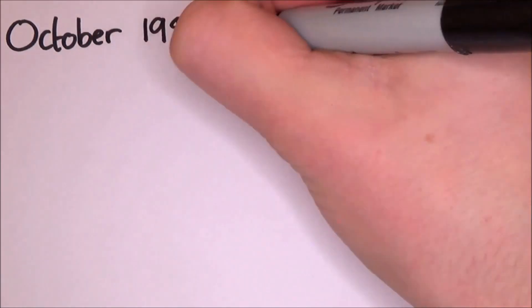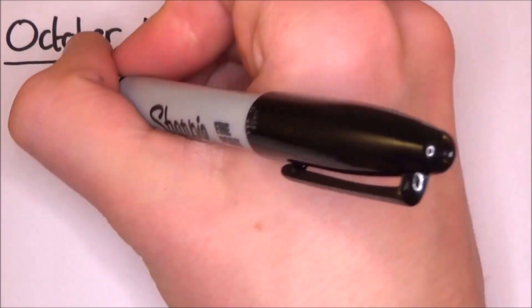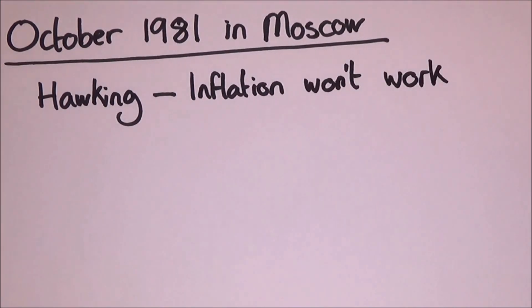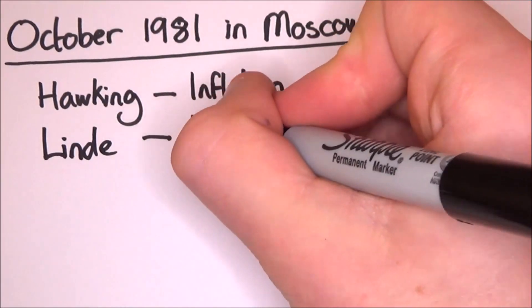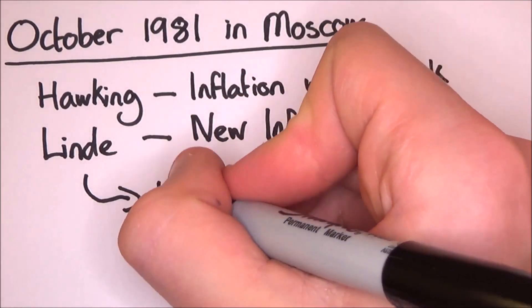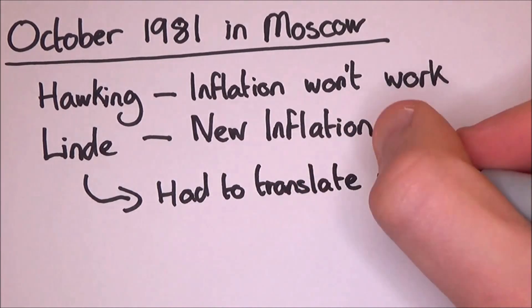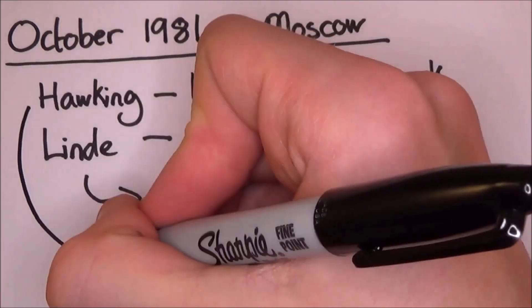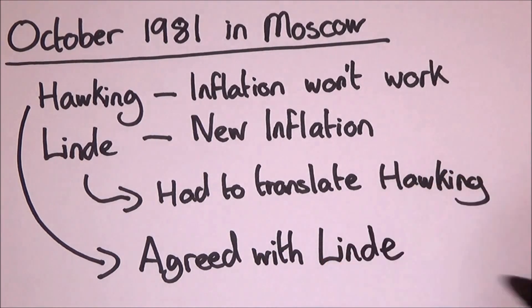Then in October in 1981, there was an international meeting in Moscow where inflation was a major talking point. Stephen Hawking himself even presented his paper claiming that inflation could never work at all, but a Russian cosmologist, Andre Linde, presented his new and improved version, appropriately named New Inflation, which got around all the difficulties in the Guth version. Ironically, Linde was the official translator for Stephen Hawking's talks, which led him to having an embarrassing task of offering the audience with the counterargument to his own work. However, after the meeting, Hawking was persuaded that Linde was correct and inflation could work after all.